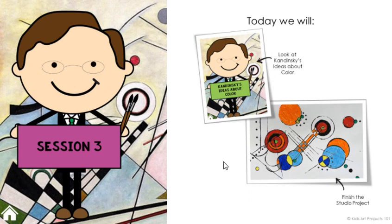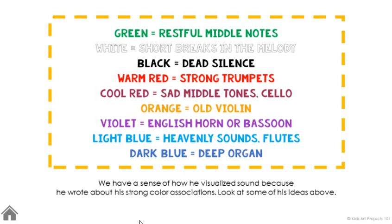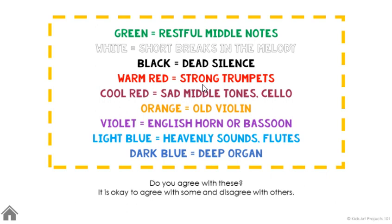Session three is where you're adding color. In session two I only provide black paint because I want them thinking specifically about shape and line. Then in session three we talk about color. Kandinsky had some really specific ideas about color — we know this because he wrote it down. The slideshow includes a list of his interpretations of different colors and how they relate to different sounds. You could play a flute sample, a trumpet sample, or a violin sample and ask them what color comes to mind. Emphasize that it's okay if they disagree with Kandinsky's interpretations — he's not the authority on their imagination.